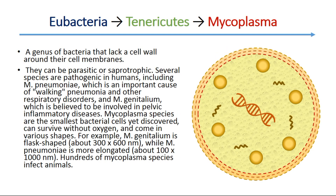Mycoplasma from Tenericutes is a genus of bacteria that lack a cell wall around their cell membranes. They can be parasitic or saprotrophic. Several species are pathogenic in humans, including Mycoplasma pneumoniae, which is an important cause of walking pneumonia and other respiratory disorders, and Mycoplasma genitalium, which is believed to be involved in pelvic inflammatory disease. Mycoplasma species are the smallest bacterial cells yet discovered, can survive without oxygen, and occur in various shapes — for example, Mycoplasma genitalium is flask-shaped, while Mycoplasma pneumoniae is more elongated. Hundreds of mycoplasma species infect animals.